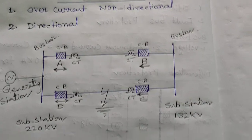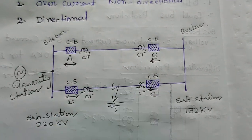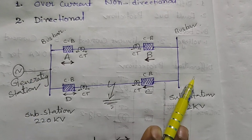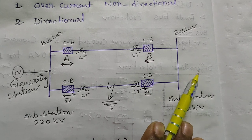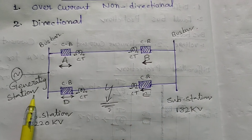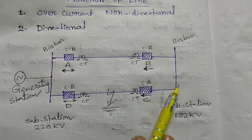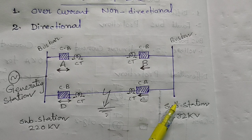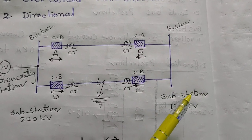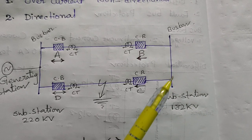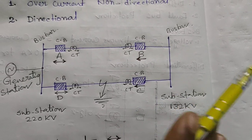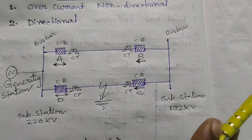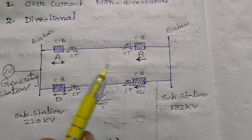Let us start with a single-line example to understand better. Suppose this is a generating station, this is one substation, and this is the end substation. The generating station feeds power to the substation, which is not connected to any grid. This substation is just a step-down substation providing power to the 33KV/11KV distribution system, and then the 11KV system goes through to the load centers.